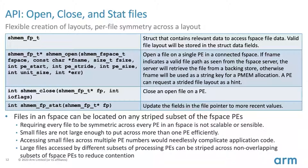This laziness is what makes the implementation feasible on SmartNICs — we're not sending a bunch of traffic back to the F-space clients to update state. Instead we ensure that while a client has a file open, nothing changes about the file that would affect that client. The stat function will update things, but if the file grows, the size seen by a PE with the file open won't reflect that until stat is called.